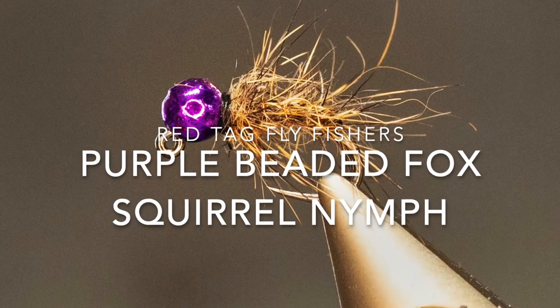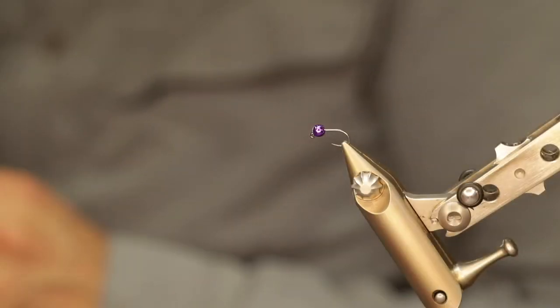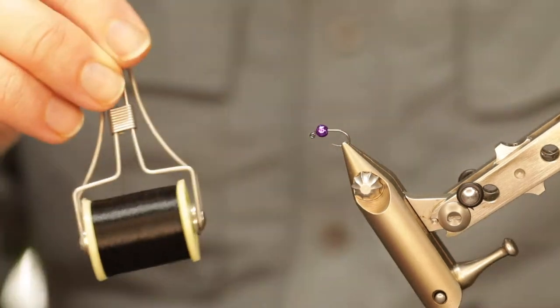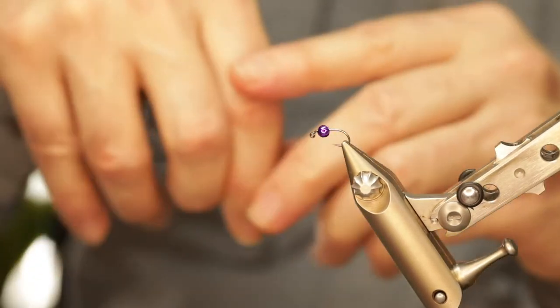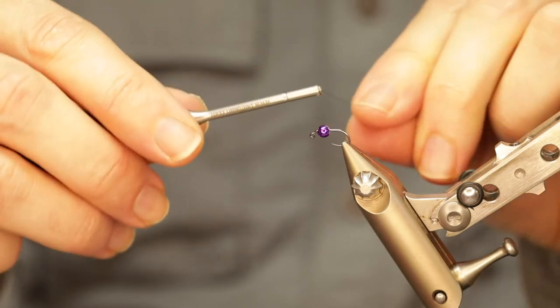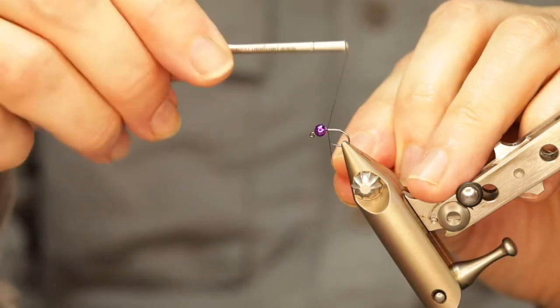Welcome to another Red Tag fly tying video. This time around we're tying a little purple beaded fox squirrel nymph, or it could be hares ear, whatever spiky material you like.